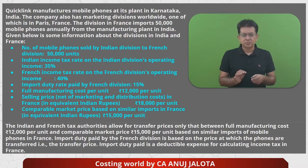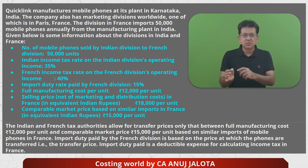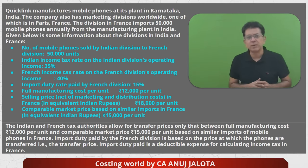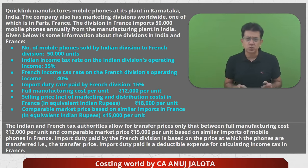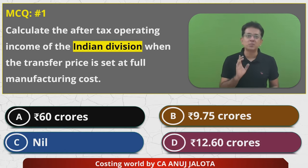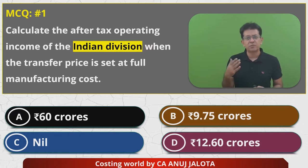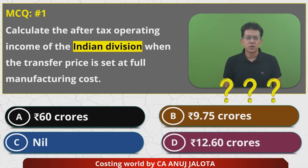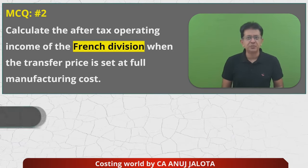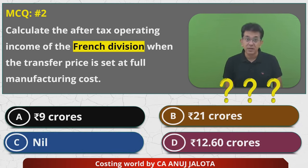Now the data is all clear. In MCQ 1 and MCQ 2, we are transferring at full manufacturing cost, which is ₹12,000, and we have to compute the profits of division one and division two. It will be slightly better if you pause the video at this point, try to work out the answers, and then continue.